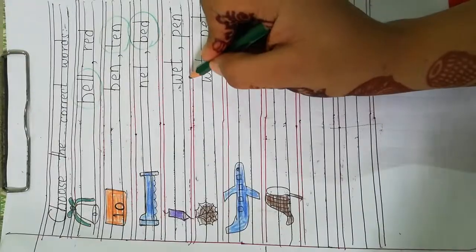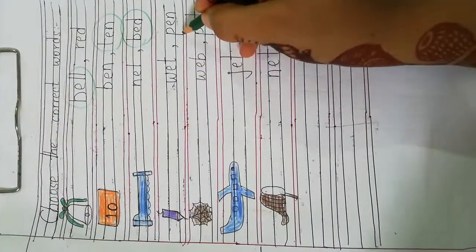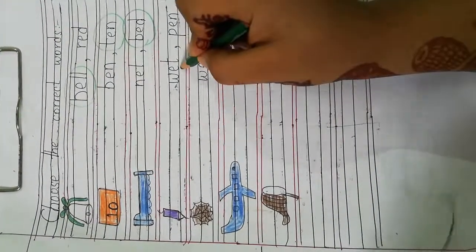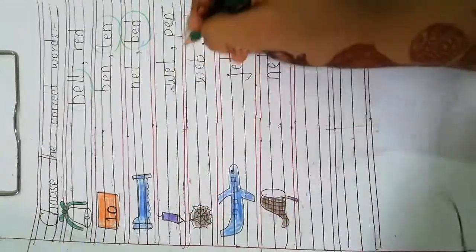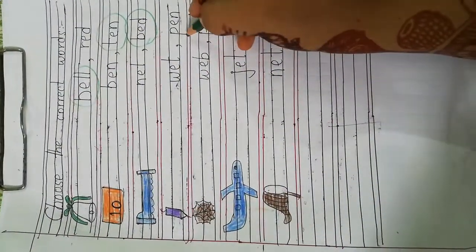Pen. W E T wet. Pen, wet, pen. So, this is pen. We will circle this. Pen.